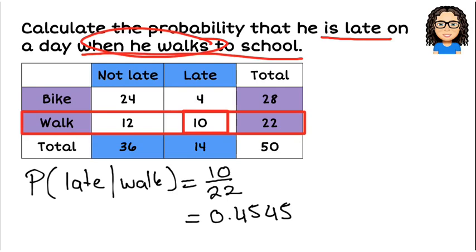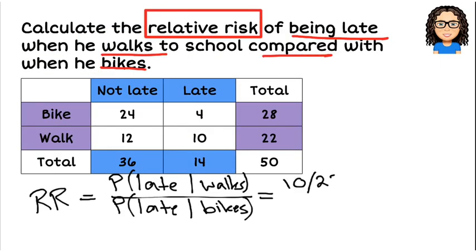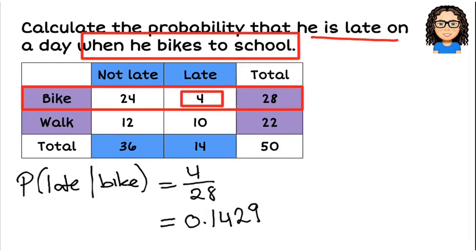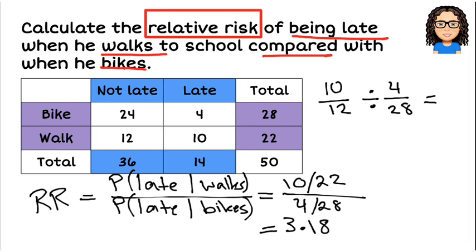So if I go back here, probability of late given that he walks is 0.4545. And I'm actually going to leave that as the fraction 10 over 22. So there's 10 over 22. All divided by the probability of being late given that he bikes is 4 out of 28. Now when I go to type that into my calculator, I would type in 10 fraction 22. And then I would say divided by 4 fraction 28. And then press equals. And that will come out to be a value of 3.18. So the relative risk of being late when he walks compared to when he bikes is 3.18.